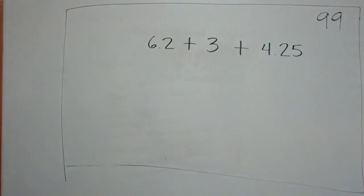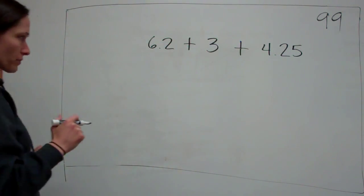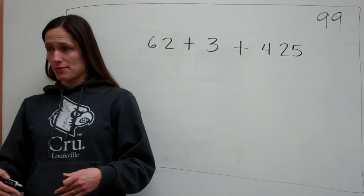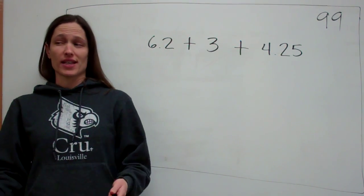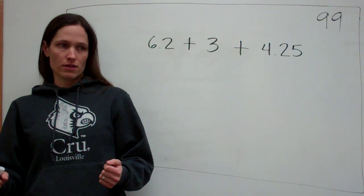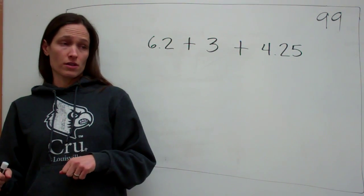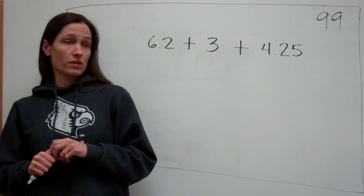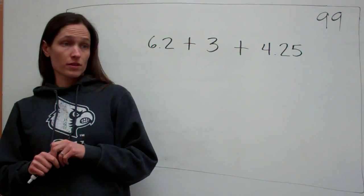Now, the first thing I want to talk about is every number has a decimal, even if you can't see it. What do I mean by that? Yes? My 3 example. It has like a 3, it would be 3.0. You're exactly right.